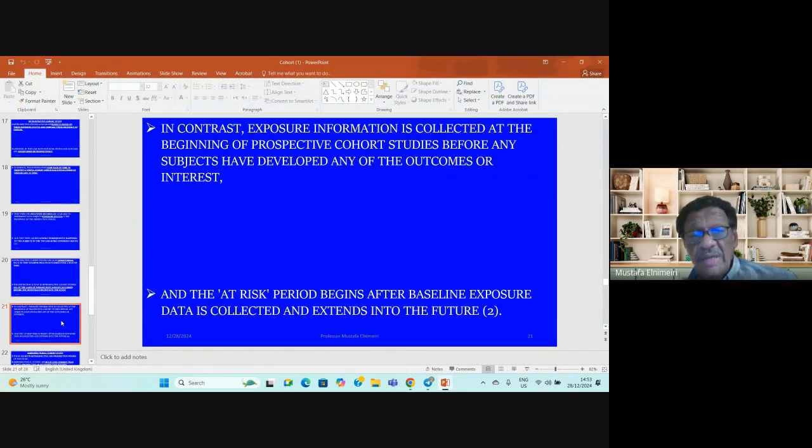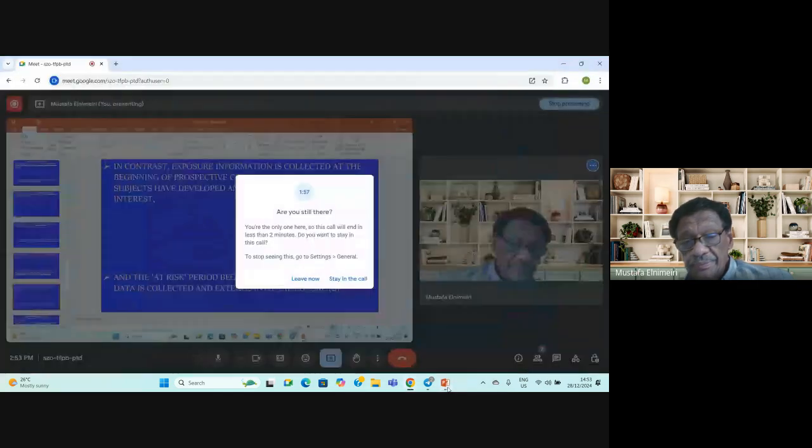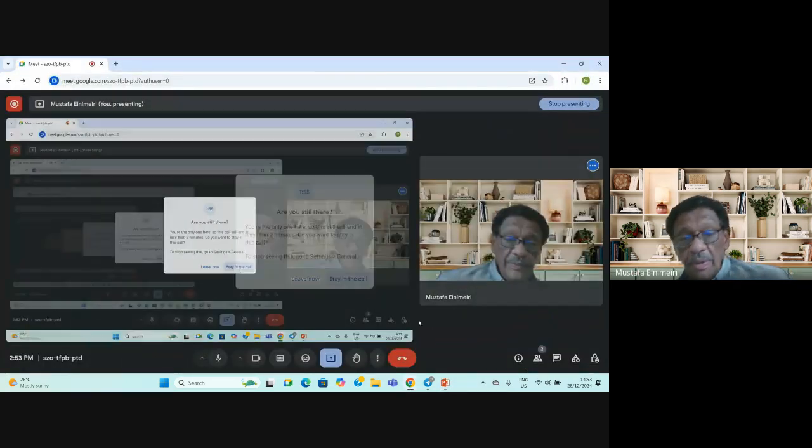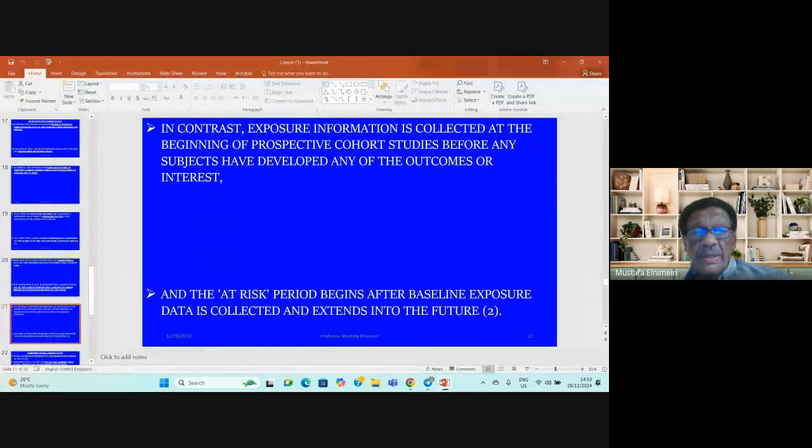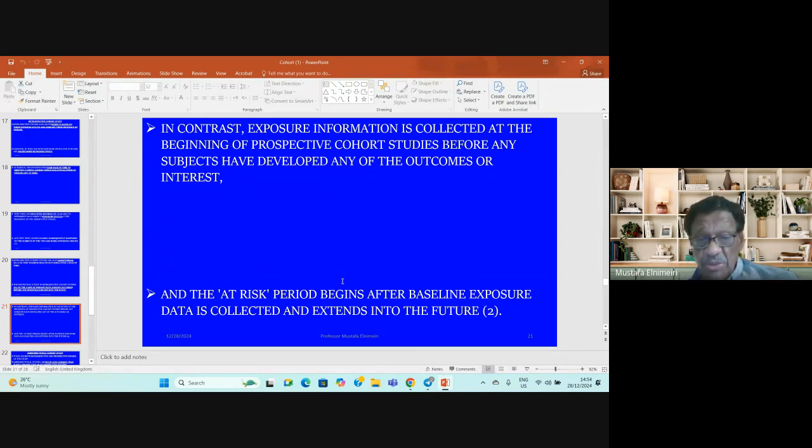In contrast, exposure information is collected at the beginning of prospective cohort studies before any subjects have developed any outcomes of interest. The interest period begins after baseline exposure data is collected and extends into the future.